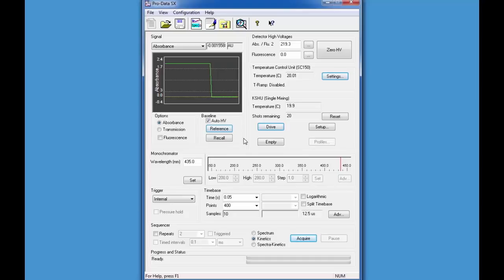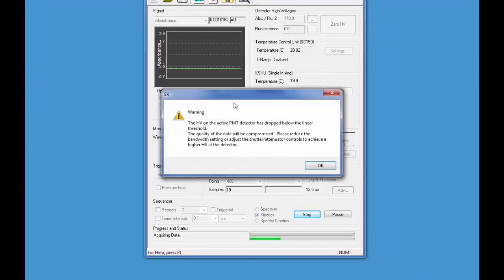If the high voltage is less than 200 volts, there is too much light and the slit setting should be decreased to reduce the light intensity to within the usable range. Nevertheless, a warning message will let you know if this is the case.